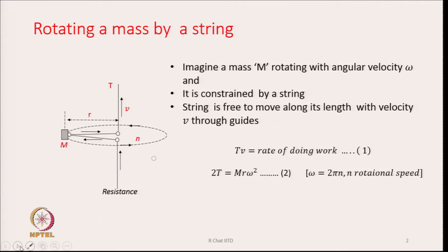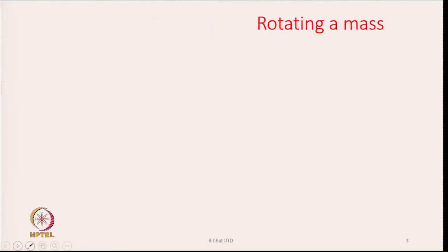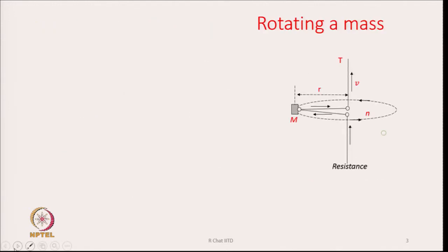The other equation is the centripetal force acting on the mass: 2T equals m·r·ω², where ω is the rotational speed in radians per second. Omega is related to rotational speed in revolutions per second by ω = 2πn. These two equations need to be satisfied.